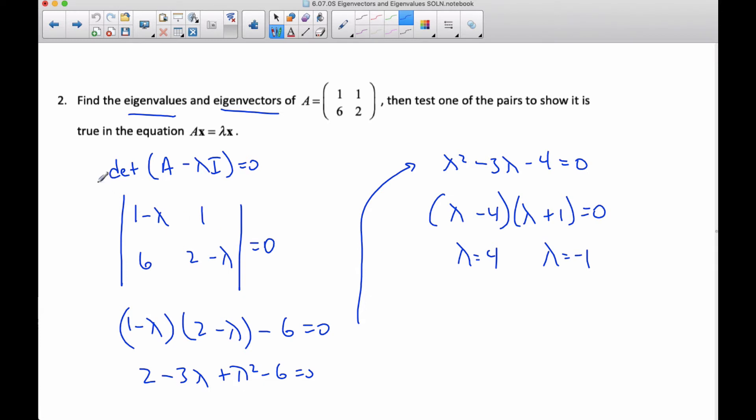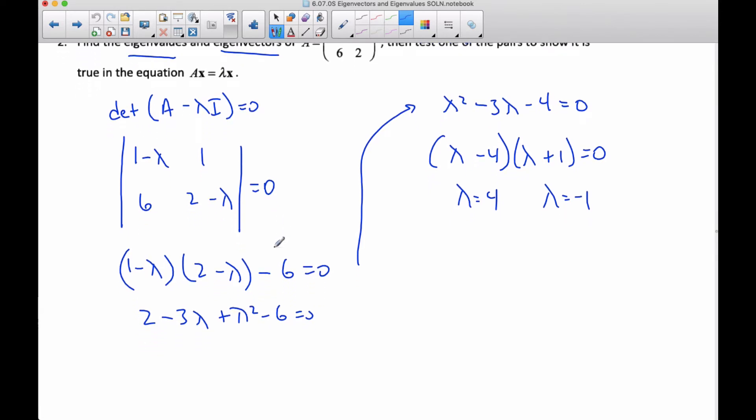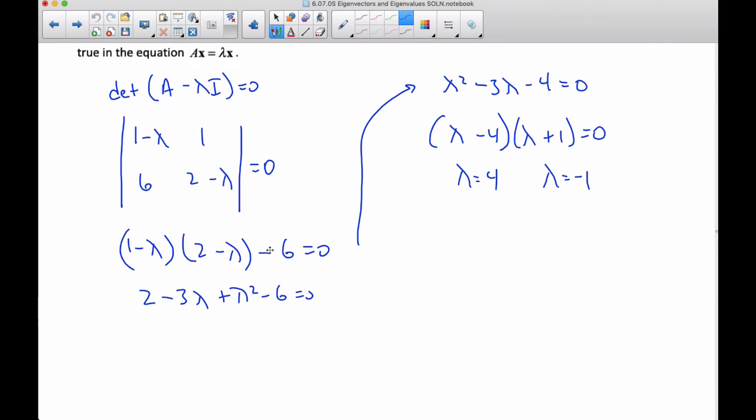And so this process started with the determinant of this, taking A, subtracting lambda zero, zero lambda, this matrix will always get me this, finding the determinant of it. And so that calculation is always the same calculation to do. It's just you have to get the process down for this calculation.